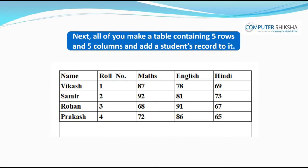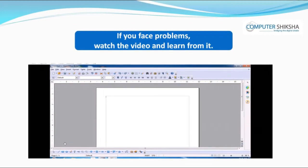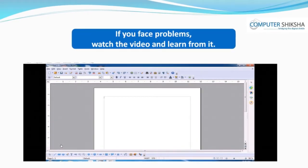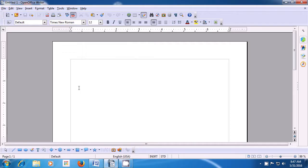Next, all of you make a table containing 5 rows and 5 columns and add a student's record to it. If you face problems, watch the video and learn from it. With the help of this video, we will practice creating a table on our writer page.